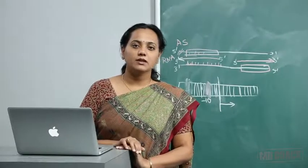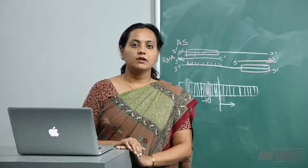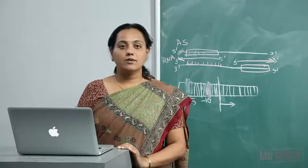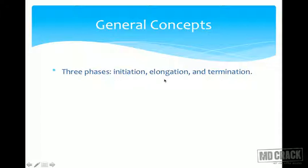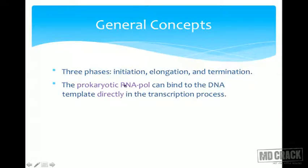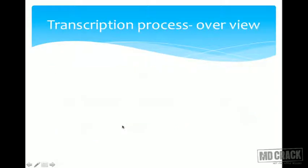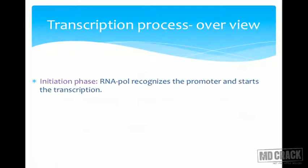Welcome back. Let us continue with transcription in prokaryotes. There are three phases: initiation, elongation, and termination. The prokaryotic RNA polymerase can bind to the DNA template directly in the transcription process. This is emphasized to differentiate from eukaryotic transcription, where the eukaryotic RNA polymerase requires cofactors to bind to the DNA template.